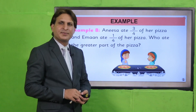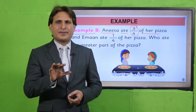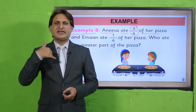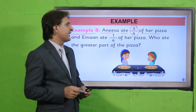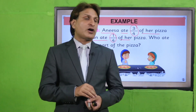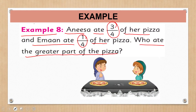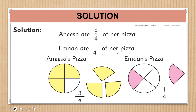Students, example آپ نے خود کرنی ہے. Example number 8: Anissa ate 3/4 of her pizza. Anissa کے پاس ایک pizza ہے جس کے total parts four ہیں، اس میں سے Anissa three parts کھا جاتی ہے. And Iman ate 1/4 of her pizza — Iman کے پاس اپنا pizza ہے اور اس میں سے وہ ایک حصہ کھاتی ہے. So اب ہمیں check کرنا ہے: who ate the greater part of the pizza؟ یہ چیز ہم نے check کرنی ہے.